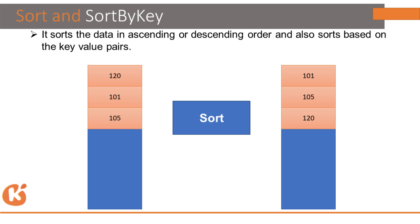Sort and Sort By Key: Sort has two modes — descending and ascending. In descending order, values like 120, 110, and 105 would be sorted from highest to lowest: 120, 105, 101. In ascending order it gives the smallest number first — 105 — then higher values up to 120.